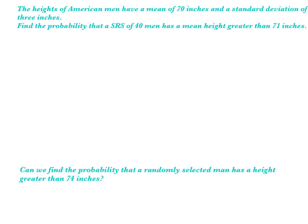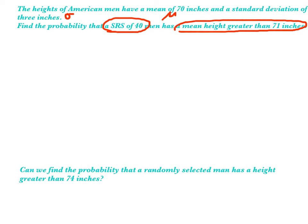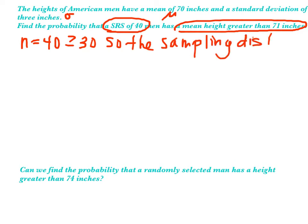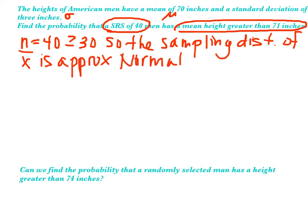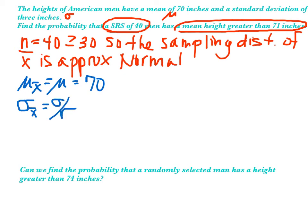Let's use the central limit theorem to do a question. The heights of American men have a mean of 70 inches (mu) and a standard deviation of 3 inches (sigma). We want the probability that a simple random sample of 40 men has a mean height greater than 71 inches. Since n = 40 ≥ 30, the sampling distribution of x-bar is approximately normal. The mean of the sampling distribution is 70 inches, and the standard deviation is 3 over the square root of 40, which equals approximately 0.471.